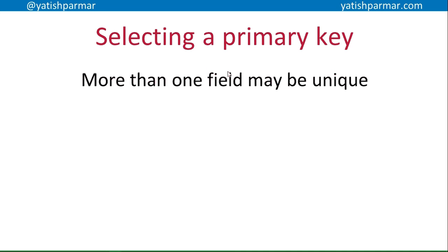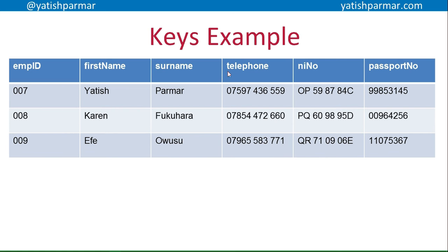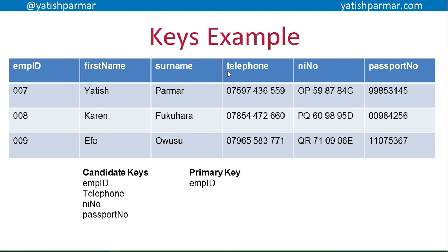Sometimes more than one field may be unique, so you have candidate keys — all of the unique fields in a relation. Secondary keys are the unique fields in a table which have not been selected as the primary key. For example, in an employees table with employee ID, first name, surname, telephone number, national insurance number, and passport number — the candidate keys would be employee ID, telephone number, national insurance number, and passport number. We choose employee ID as the primary key, so the secondary keys are telephone number, national insurance number, and passport number.